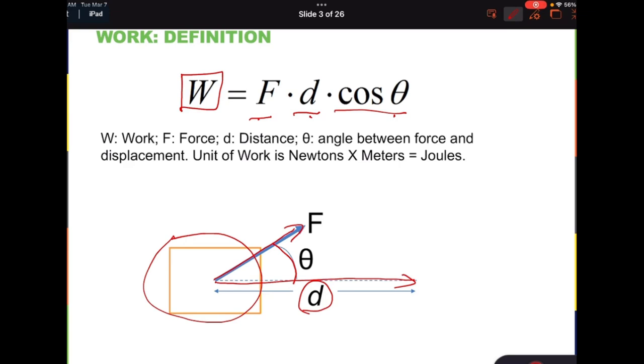And the angle can equal to between 0 and 180 degrees, including 0 and 180 degrees. So as you can tell that work has a unit, which is newtons times meters, and we define a new unit for work. It's called joules.